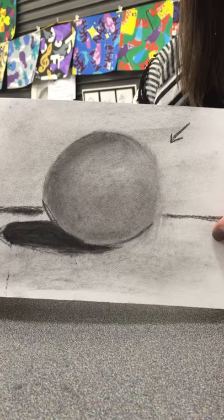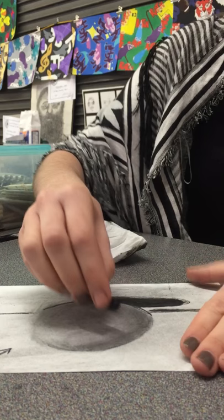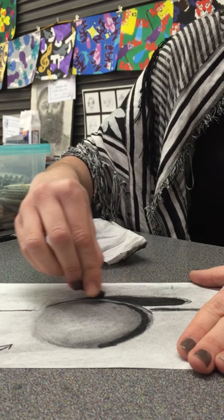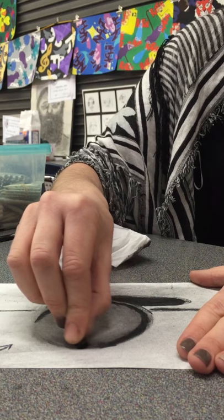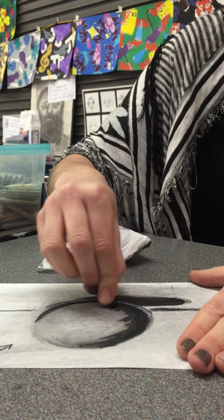So the next thing we're gonna do is go in and add some more value. I'm gonna go right to the edge but I'm not going all the way to the bottom because I'm gonna save an area for a little bit of reflected light so you can tell the difference between this and my sphere and the shadow. So I'm adding more values.